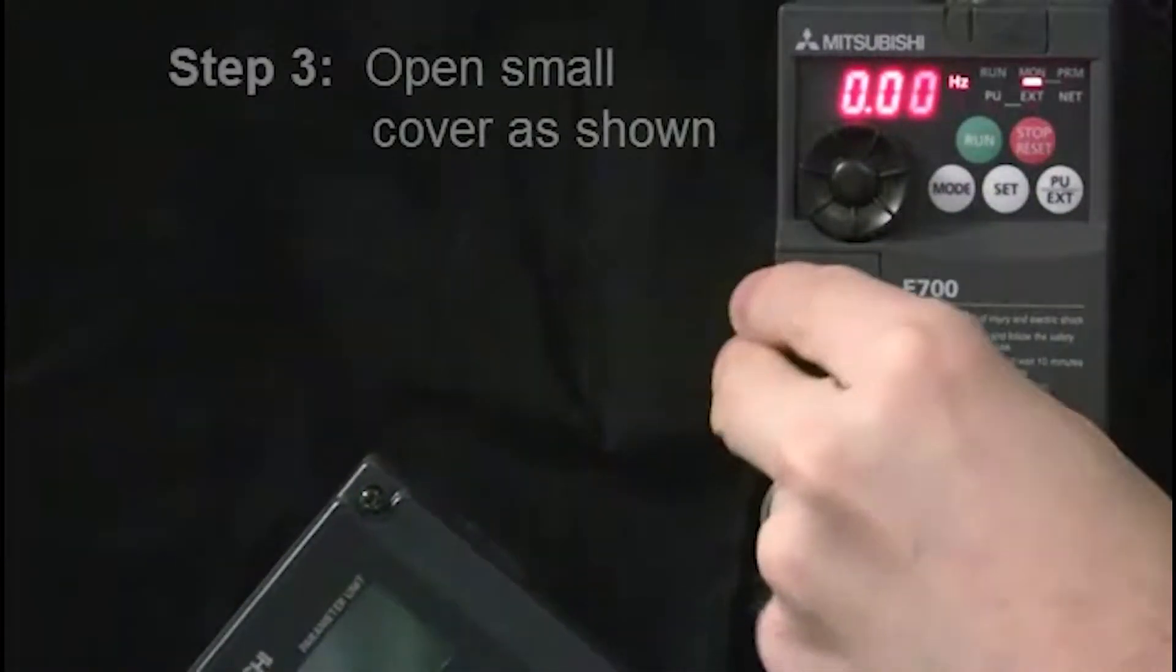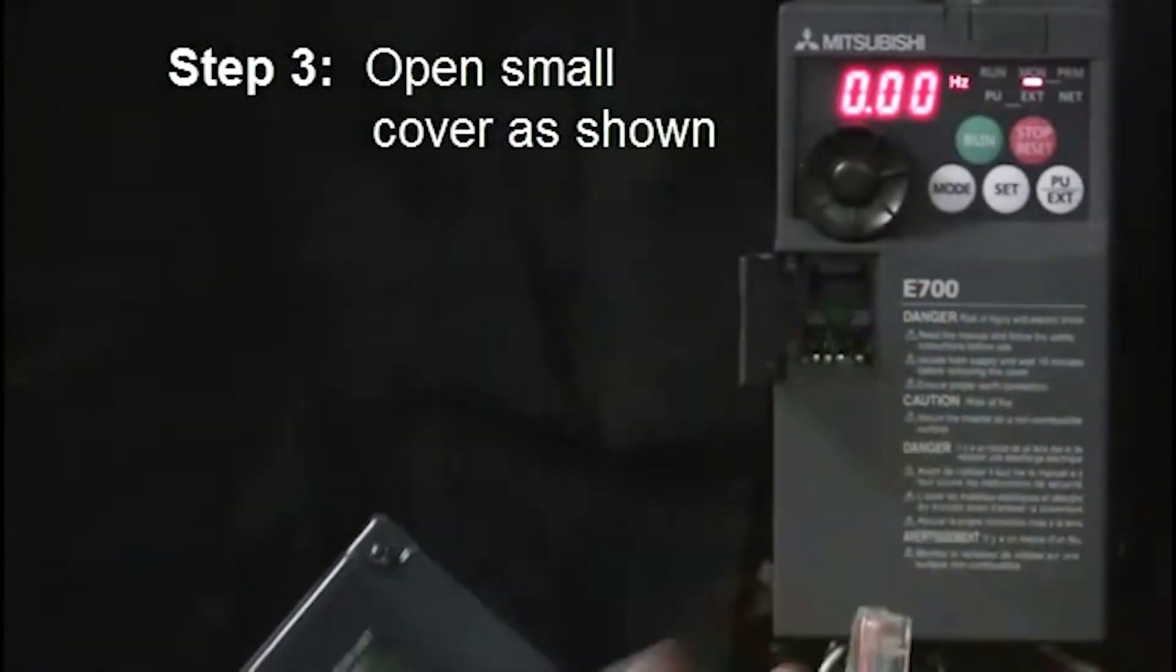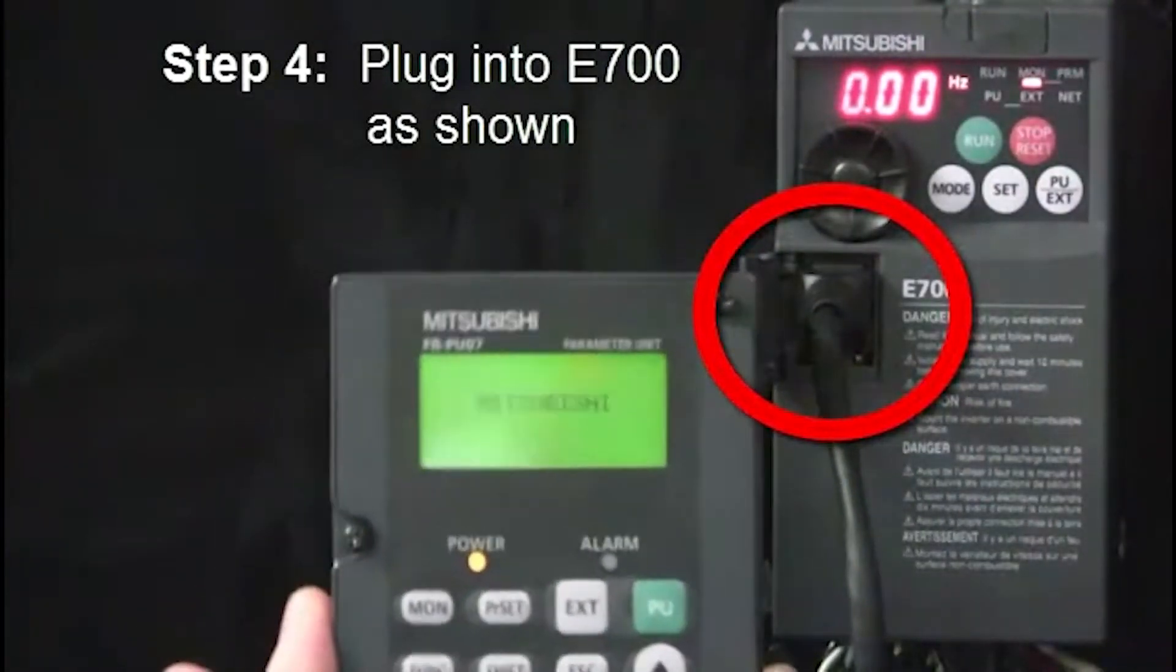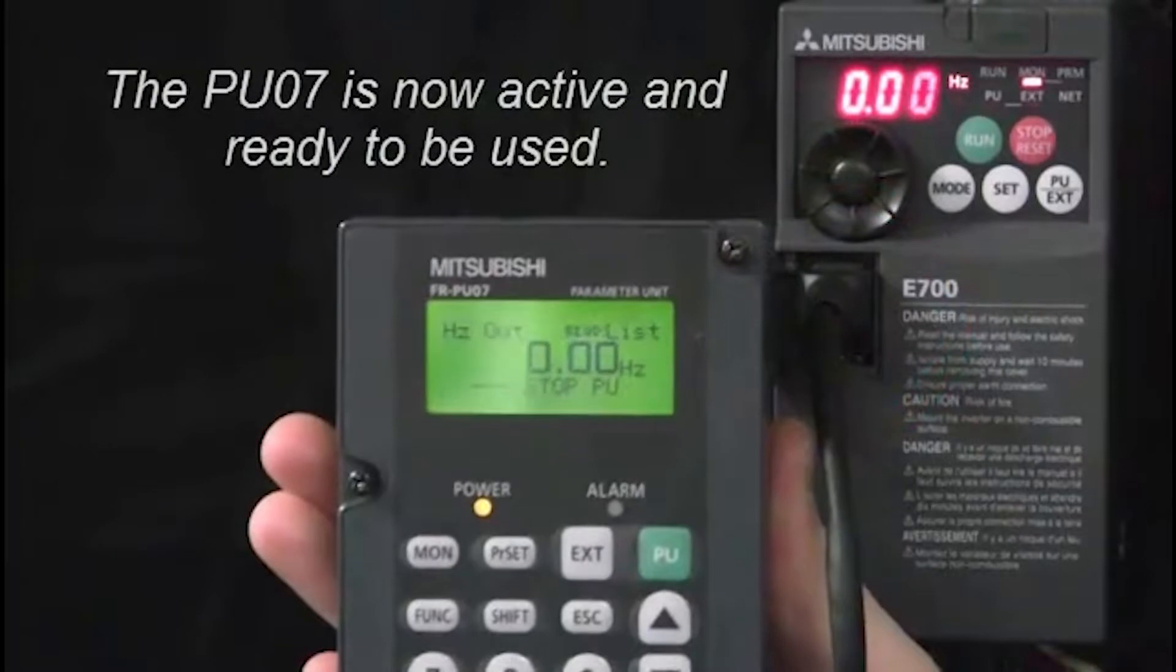Next, open up the small cover on the front of the VFD. Plug this end into the E700 as shown. The display will illuminate and you are now ready to use the unit.